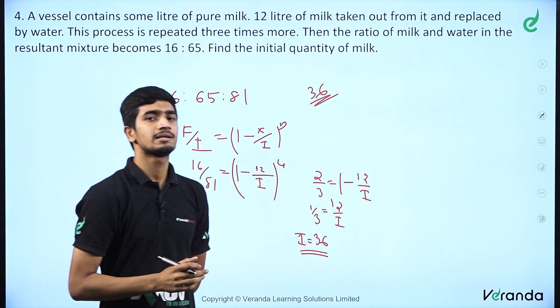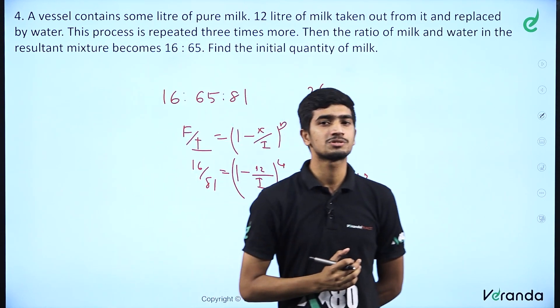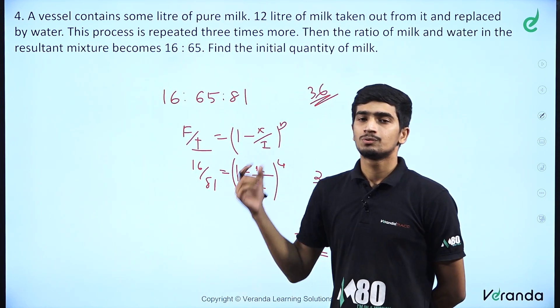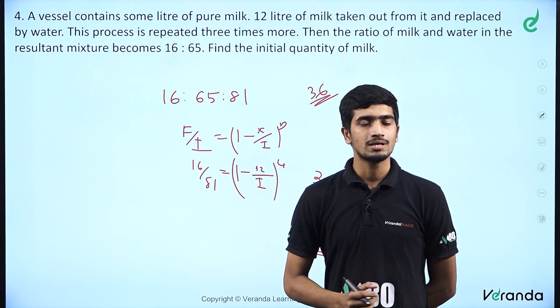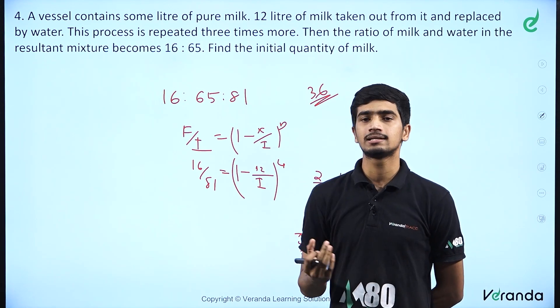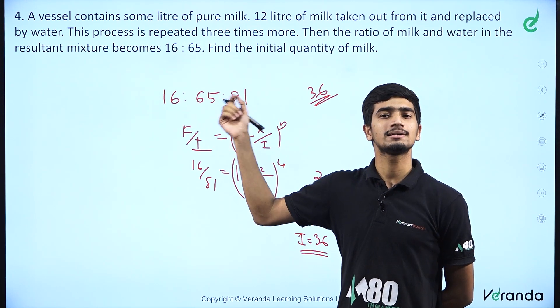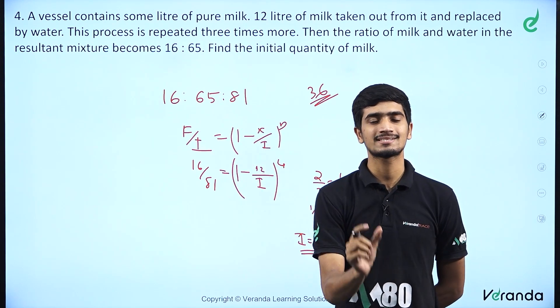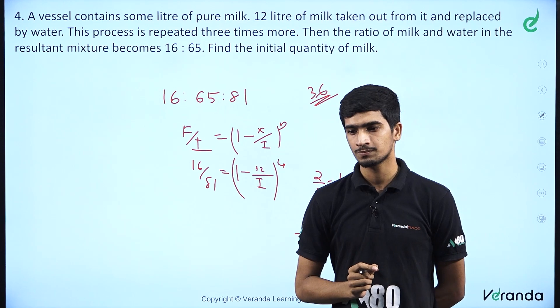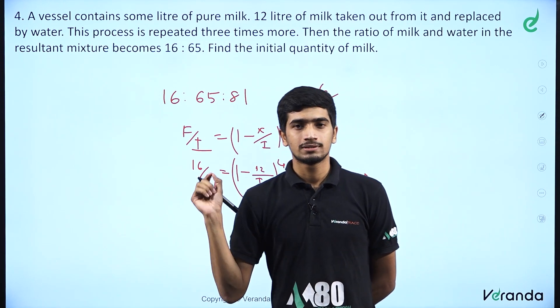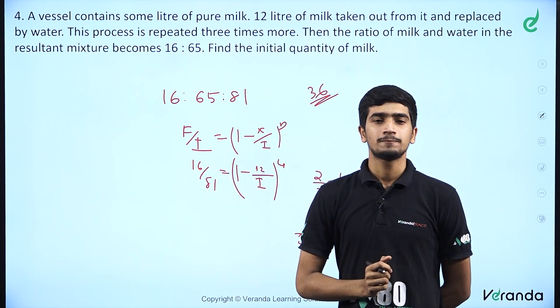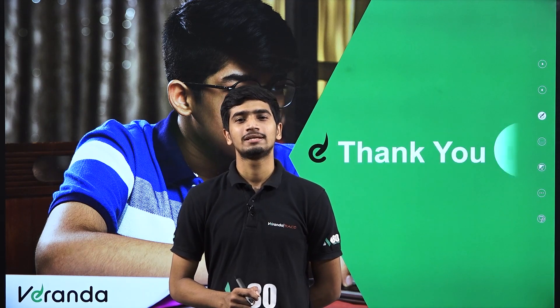In this session, we learned how to solve dilution problems using the formula f by i equals 1 minus x by i, whole raised to n, applicable to exams like CHSL and CGL. We can calculate answers in seconds using this approach. All the best, and thank you for watching this video.